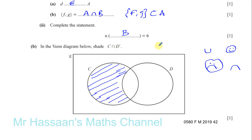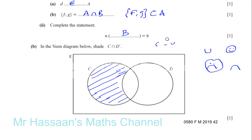If it was C union D complement, then you'd shade all of C including the overlapping part, and then shade everything outside of D as well. The only thing that wouldn't be shaded would be the D-only crescent. But this is not a union — this is intersection, which means you have to be in both C and also outside of D.